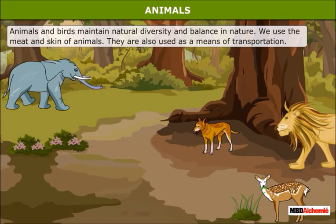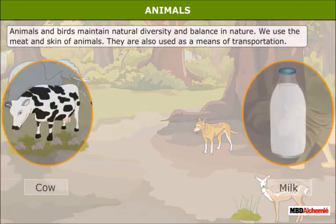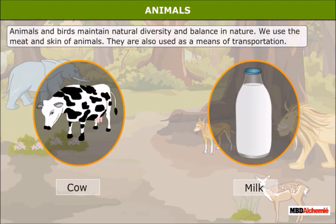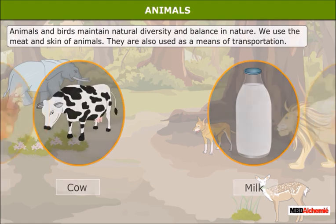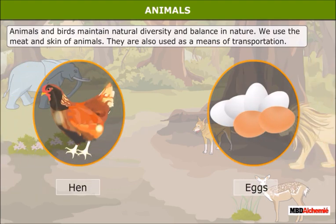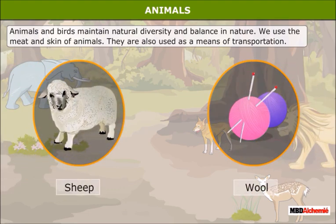Animals and birds maintain natural diversity and balance in nature. We use the meat and skin of animals. We get milk from cows, eggs from hens, and wool from sheep.